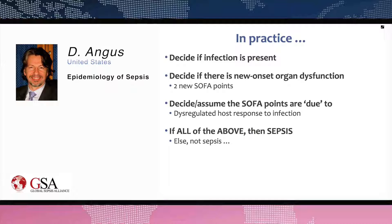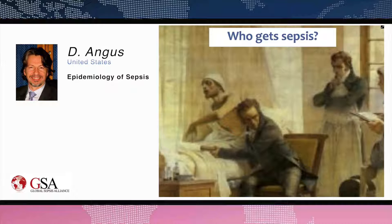In practice, what happens is we decide if infection is present, decide if there's new onset organ dysfunction — for example, the Sepsis-3 criteria said the observation of two new SOFA points — and then we decide or assume the SOFA points are somehow due to the dysregulated host response to infection. If all of the above is true, the patient is septic; if not, they're not.